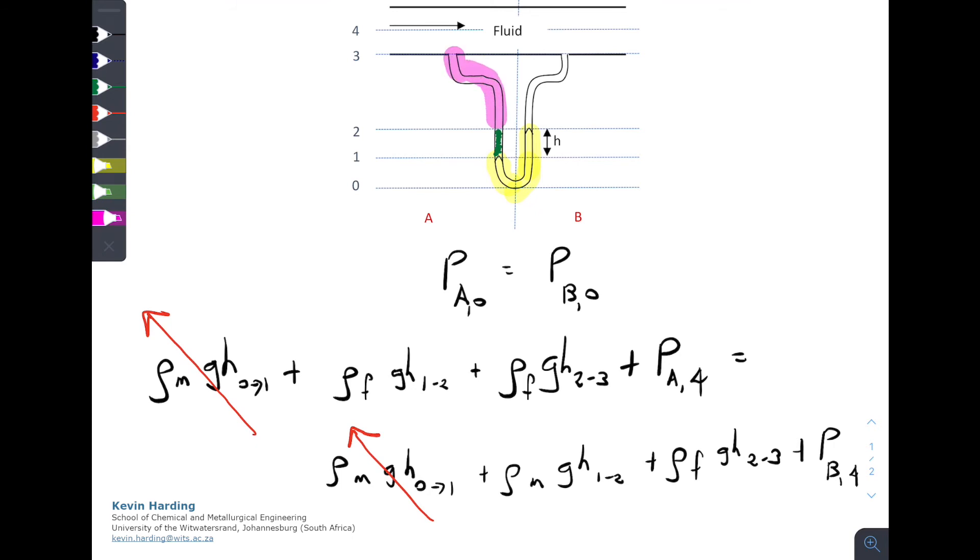The next term around, we then have the next section from 2 to 3. The fluid in both sections is the same, and when we look at the equation, we have ρFGH 2 to 3 on the left-hand side, and ρ of the fluid GH from 2 to 3 on the right-hand side, so those two can also cancel. So we've now got a simplification of this equation.